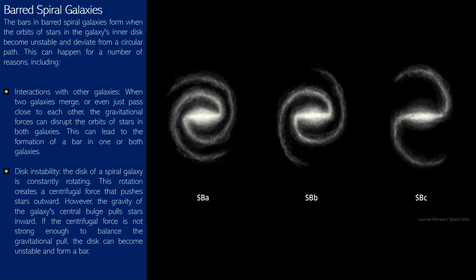The bars in barred spiral galaxies form when the orbits of stars in the galaxy's inner disk become unstable and deviate from a circular path. This can happen for a number of reasons, including interactions with other galaxies.